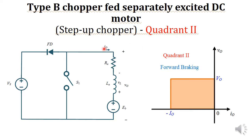In this circuit diagram you can see it feeds the armature of a separately excited DC motor. The step-up chopper has its low voltage side connected to the armature terminals of the motor and the high voltage side is connected to the power supply Vs. The current flow will be from the motor to the source, which we will discuss later. This is the basic circuit diagram; we will analyze the practical drive circuit later.